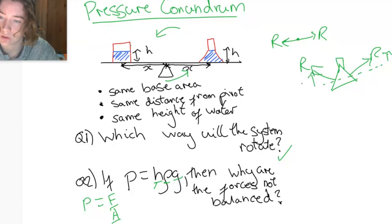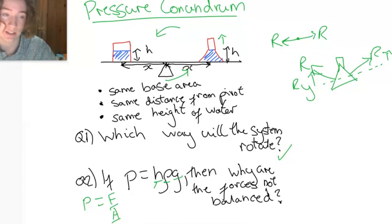there's a vertical component, so I'm going to call it RY, there's a vertical component to the reaction force, which means that actually, although the pressures are the same, the forces aren't balanced due to the shape of the container. So because there's a slight vertical component, and there's not one on the left, it means that there's a net anti-clockwise moment, which causes the system to rotate anti-clockwise.